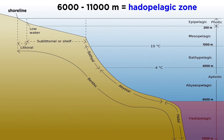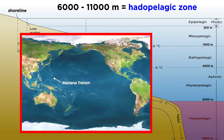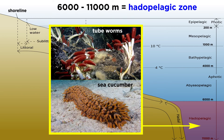Finally, the last zone is the hadopelagic zone, and it extends from 6,000 to as far as 11,000 meters. The hadopelagic zone is only found in deep ocean trenches, like the Mariana, and it is occupied only by a few species of tube worms and sea cucumbers.